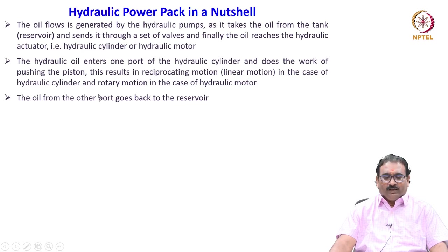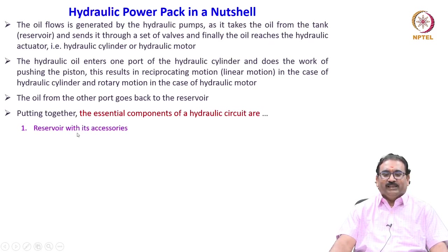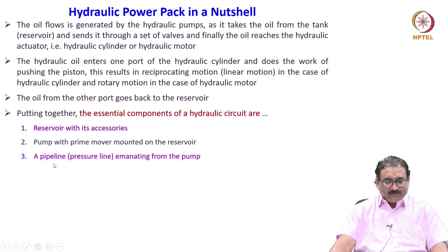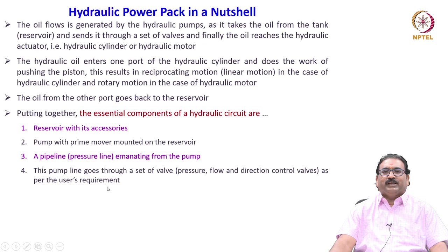The oil from the other end goes to the reservoir. Putting together, the essential components of the hydraulic circuit are: reservoir with its accessories, pump with prime mover mounted on the reservoir, a pipeline — the pressure line, what you will call a P line — emanating from the pump. The pump line goes through a set of valves: meaning pressure, flow, and direction control valves as per the user's requirement.